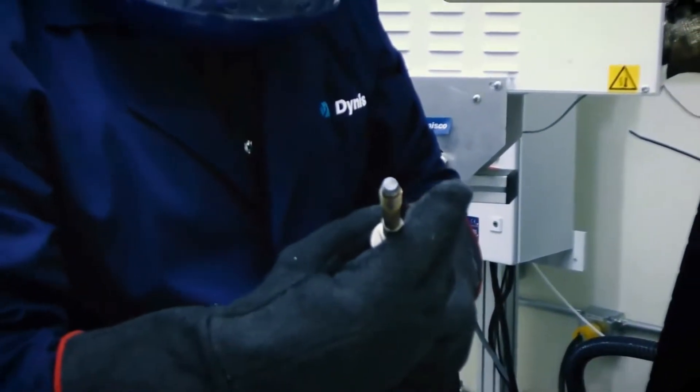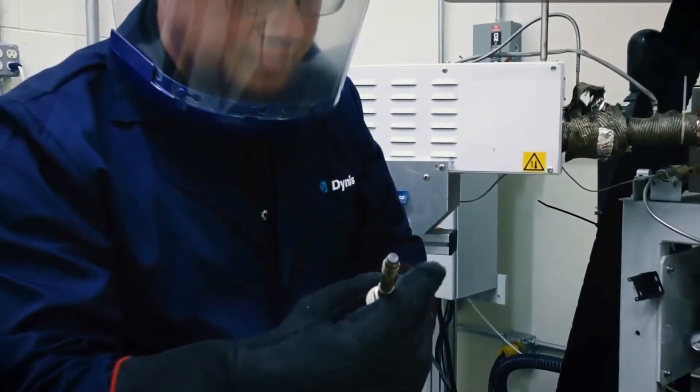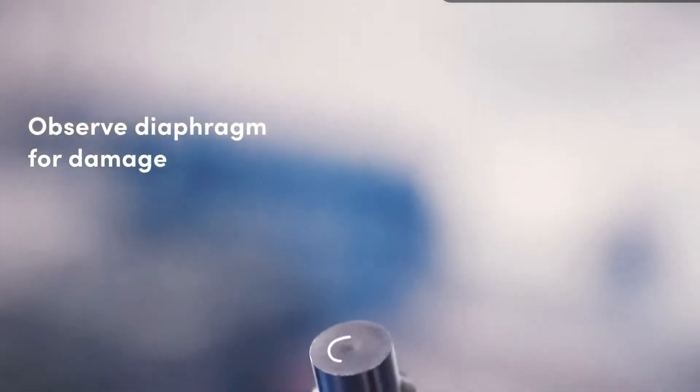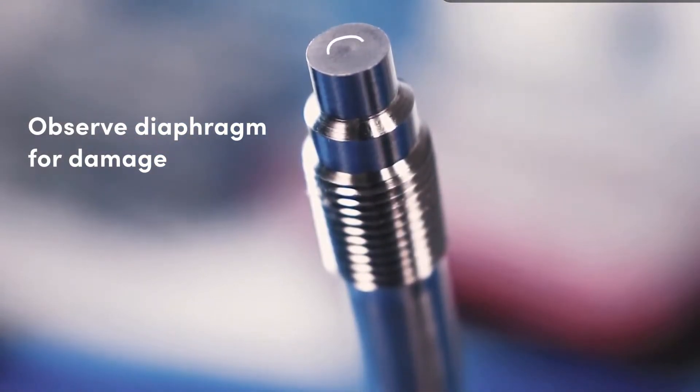Now that the material has been cleaned off the diaphragm, the technician examines the tip for damage or deformations. Damage may appear as a depression or a bubble on the diaphragm. Any type of deformation may affect the pressure reading.